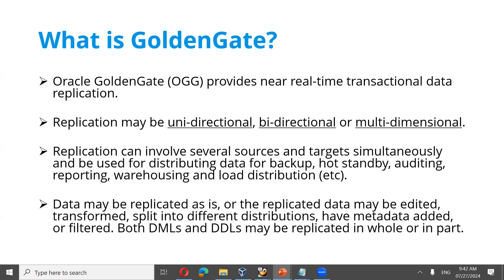With Golden Gate, replication can be unidirectional — one-to-one, where one site replicates to another with the application connected to one site. Replication can also be bidirectional, where both sites are live and the application can connect to either site, with data replication happening to the other site. Golden Gate also supports multi-dimensional replication involving multiple sites.